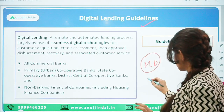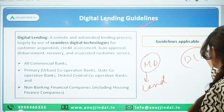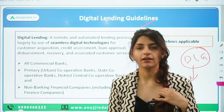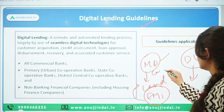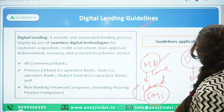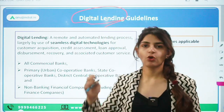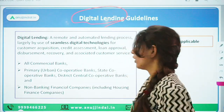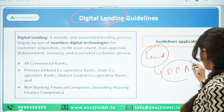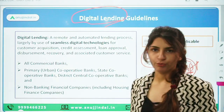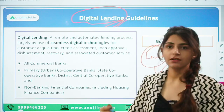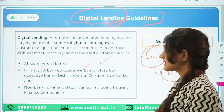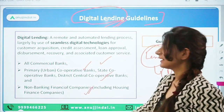There are master directions on credit cards and there are digital lending guidelines. RBI has given clarification — for example, on EMI programs offered by credit cards: will they come under master directions of cards or digital lending guidelines? To understand this, we need to look at what digital lending means. Digital lending is when you lend from a bank or an NBFC online using a digital platform or digital application. These digital lending guidelines are applicable on all commercial banks, primary urban cooperative banks, state cooperative banks, district central cooperative banks, and NBFCs.